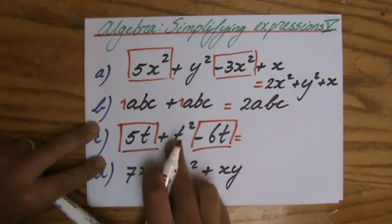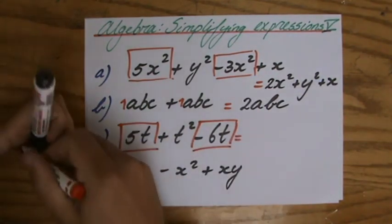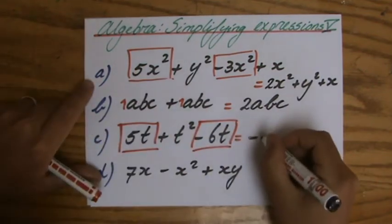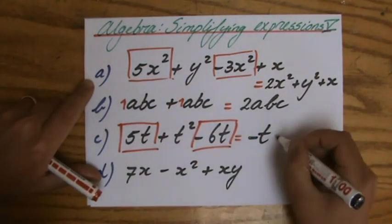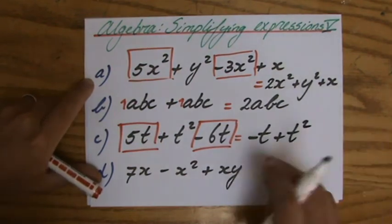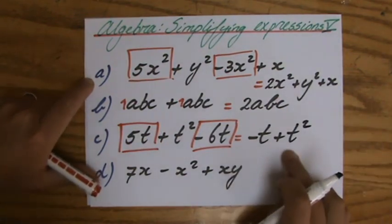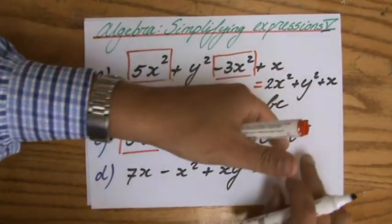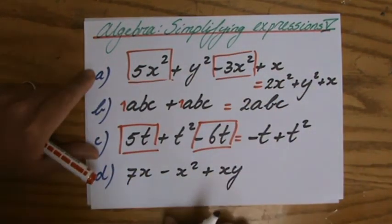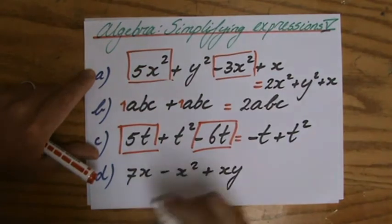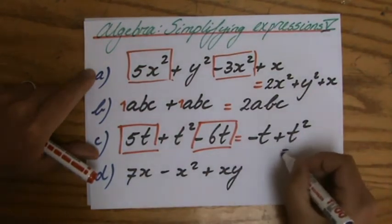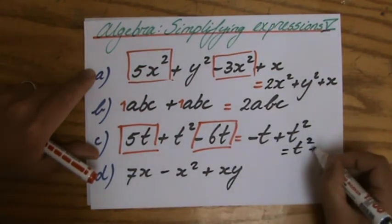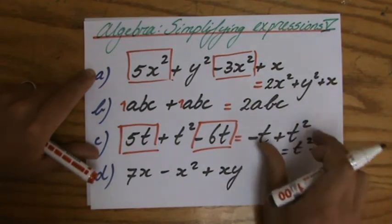The positive belongs to the t². 5t take away 6t will be minus t. And then I have t², and they are unlike because this combination is not the same—that is t and that is t times t, or t to the power of 2. So the power also has to be the same for them to be like terms. Perhaps some of you said t² minus t—that is exactly the same.